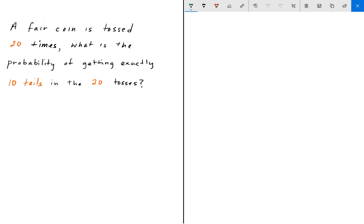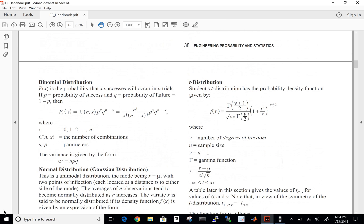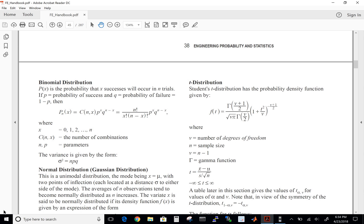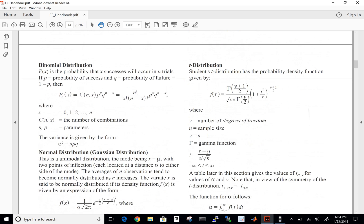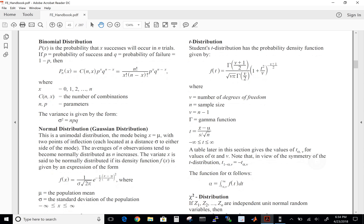To solve this, we can go to the FE handbook. In the probability and statistics section, we have several different sections. We have a distribution section, which will give us the definition of a binomial distribution, a T distribution, a Gaussian distribution.